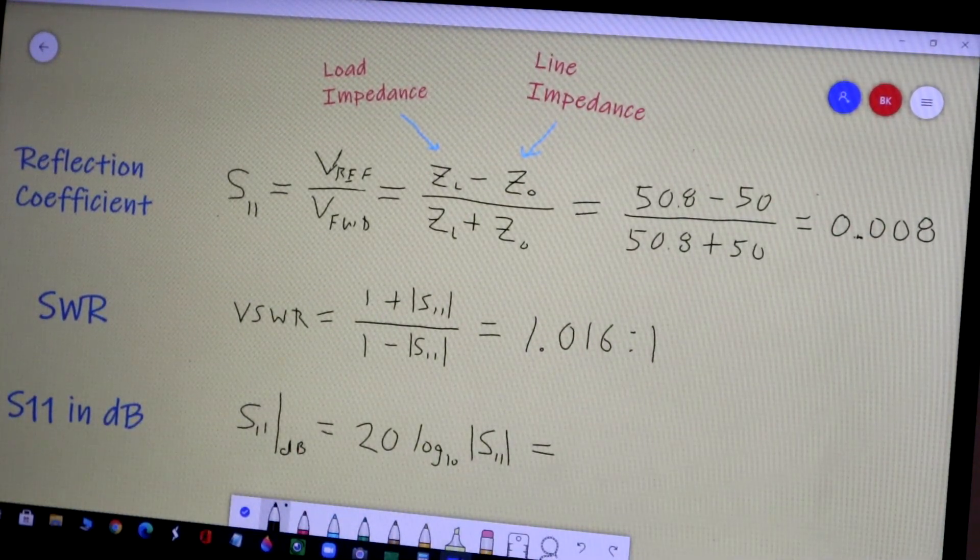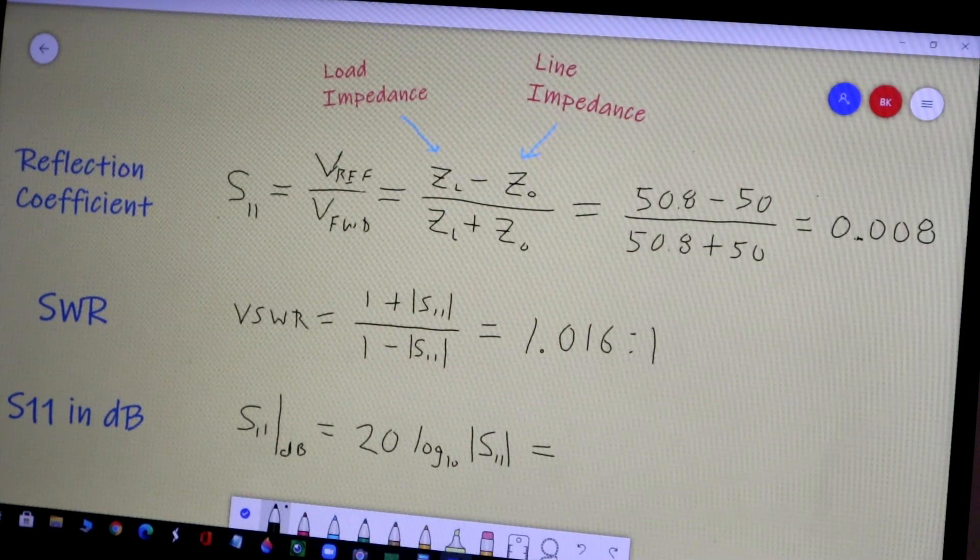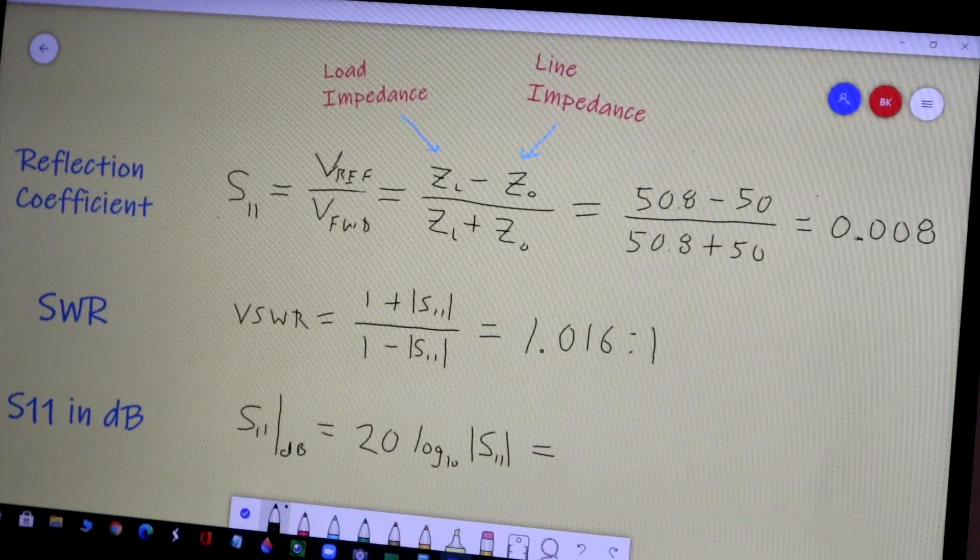That's a very good SWR. We would probably be happy with an SWR of 1.1 to 1 typically, or more simply an SWR of 1.1. 1.3 is probably okay for many applications and even 2 to 1 can be accepted.